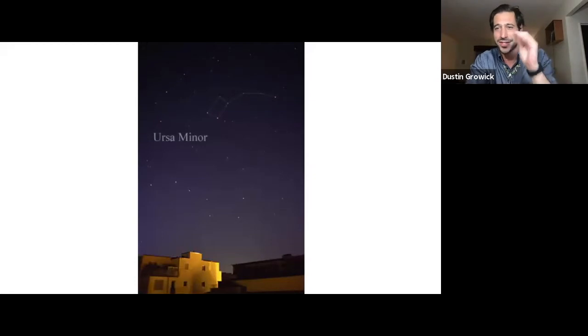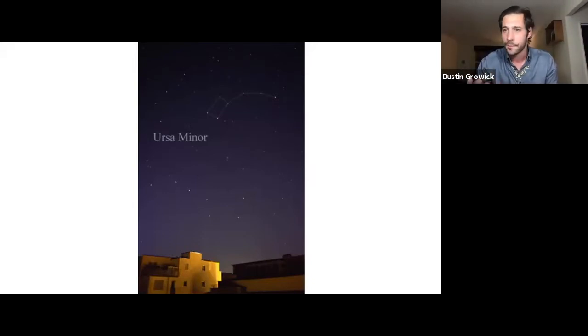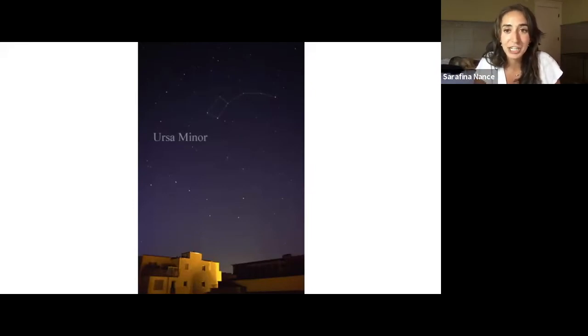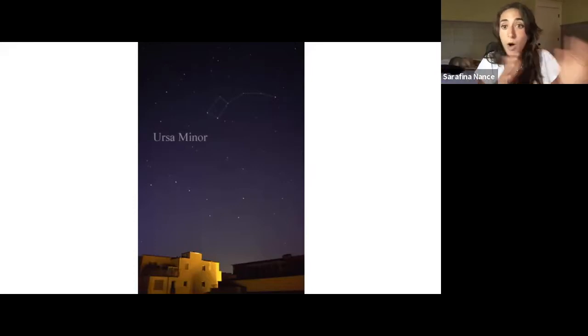Seraphina, what do we need to know about Ursa Minor with respect to astrophysics? The one star everyone should know is Polaris — the North Star. It won't be our North Star forever, because the Earth wobbles. With that wobbling, we change North Stars every some amount of time — Polaris was not always and will not forever be our North Star. As paleontologists and astrophysicists, we both think in deep time.